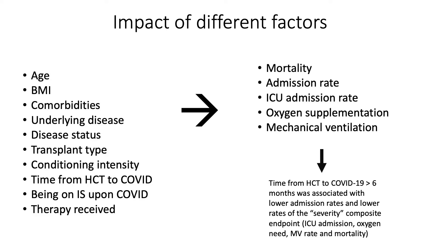66 patients had repeated PCRs; 51% turned negative with a median time to negativity of 37 days, indicating prolonged viral shedding. Two-thirds developed antibodies at a median of 34 days. Analyzing risk factors for outcomes — age, BMI, comorbidities, disease status — we found that time from transplant to COVID was the key factor: patients acquiring COVID within six months of transplant had worst outcomes.